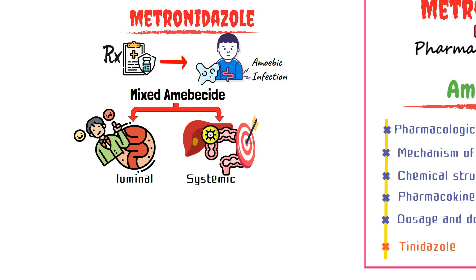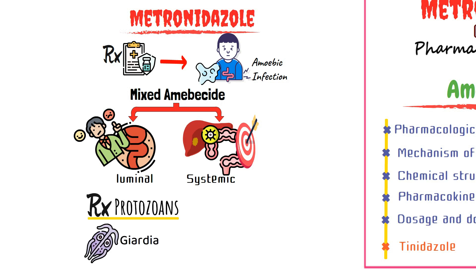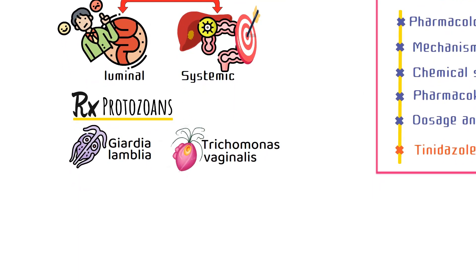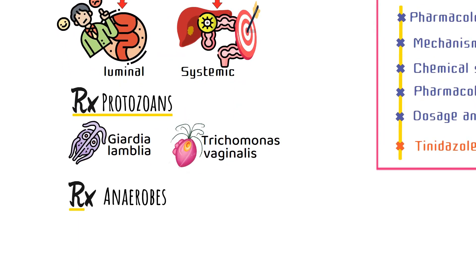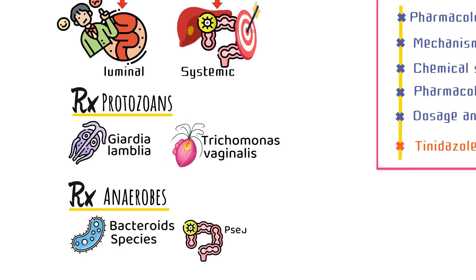We have discussed these in our previous video, so I recommend watching it first for better understanding. Metronidazole is also used for infections caused by other protozoans like Giardia lamblia and Trichomonas vaginalis, and anaerobic bacteria like gram-negative bacilli such as Bacteroides species. It is the drug of choice for pseudomembranous colitis caused by the anaerobic gram-positive bacillus Clostridium difficile (C. diff), though vancomycin is now mostly preferred, and in some severe cases metronidazole is combined with vancomycin.